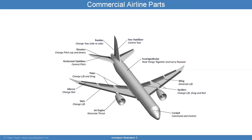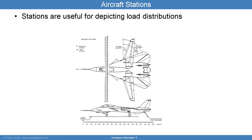Aircraft stations are used because analysis responsibilities are distributed across multiple people, and stations define what each person is responsible for. They also help with plotting free body diagrams so everyone knows where the highest stresses occur — for example, around 500 units from the tip.